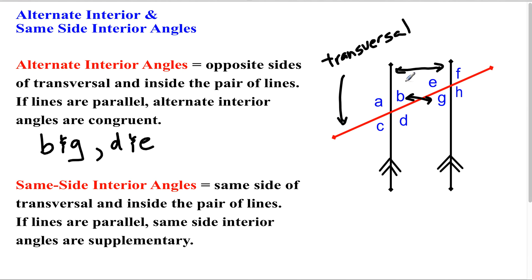But let's say right now B was 52 degrees. That means G has to be 52 degrees as well. They're always going to be the same if the lines are parallel.